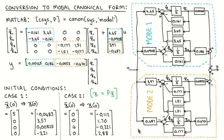The block diagram for the modal form shows the first mode in blue and the second mode in orange. We can clearly see that the states of the first mode have no connections to the states of the second mode and vice versa. For the first simulation, we keep the input zero and set the initial value of state x1-bar to 5, with the rest of the states set to zero.